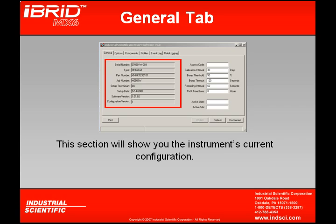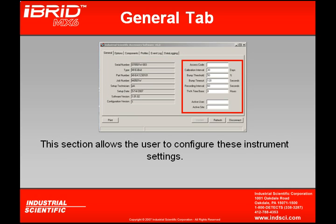Under the General tab, it's going to show us how the instrument is currently configured — things like serial number, the type of instrument, and even its configuration software. On the opposite side, it's going to show some of the instrument's configuration settings. I can not only view how the instrument is set up here, but I can also change these values as well. In the next module, which is configuration, we're going to talk about what each one of these means more thoroughly and how you change it in the instrument itself, but remember that you can also do it through the data link.